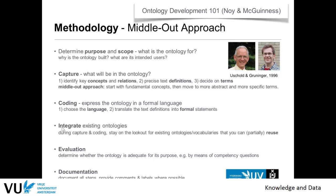Always look for reuse. When you're working on, for example, geography, there are many existing ontologies — GeoNames can be reused. You don't have to do all the domain modeling by yourself. There might be existing ontologies or vocabularies that can be partially reused; you probably don't need everything from GeoNames, but at least some part is very useful. Another advantage is that if you use GeoNames, other people will know what you're talking about, making your ontology even easier to share and understand.